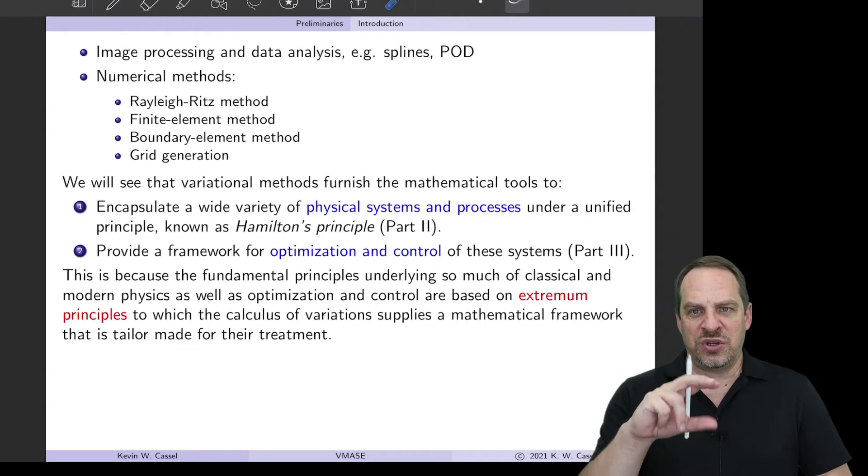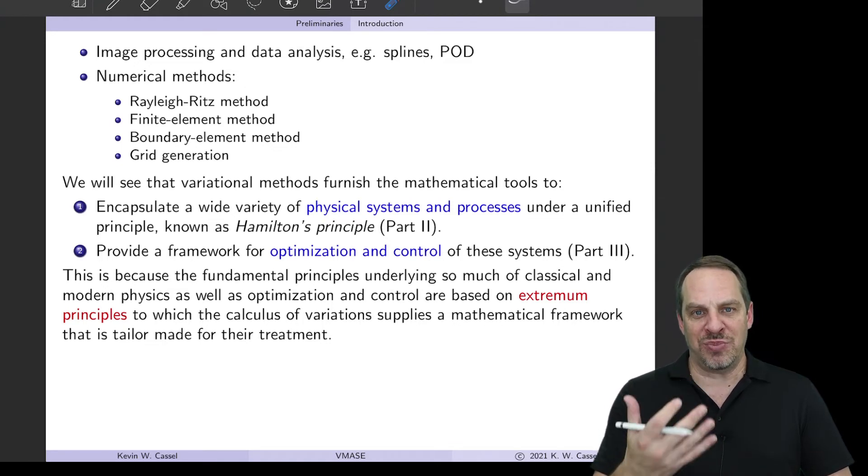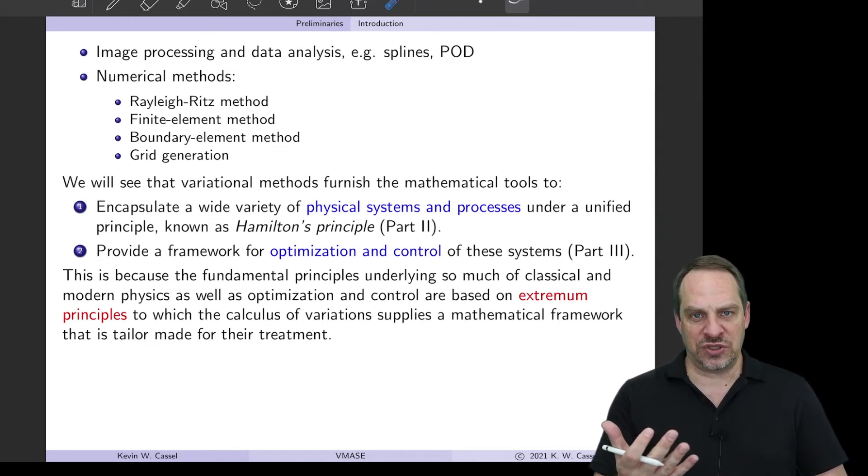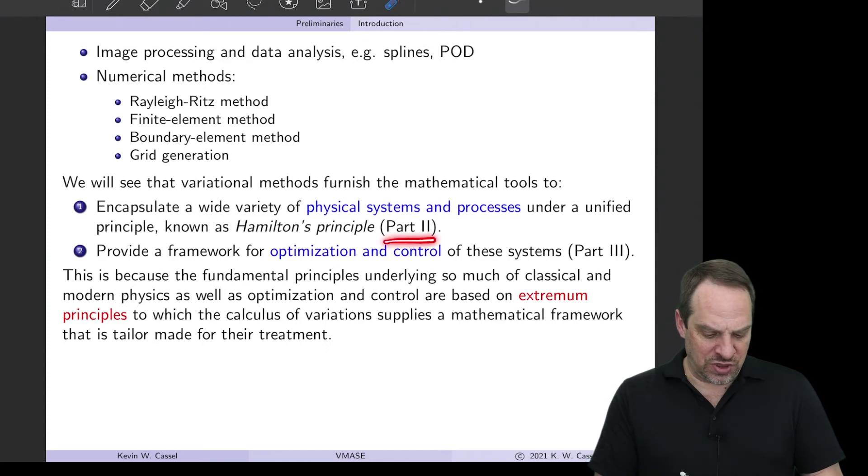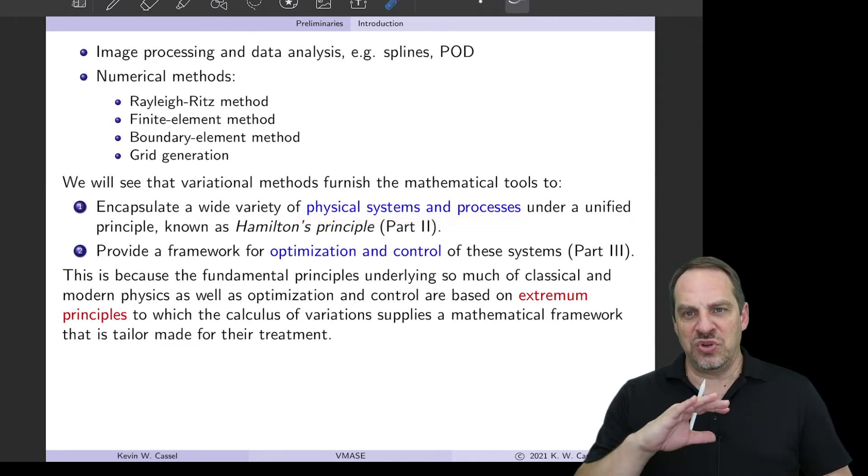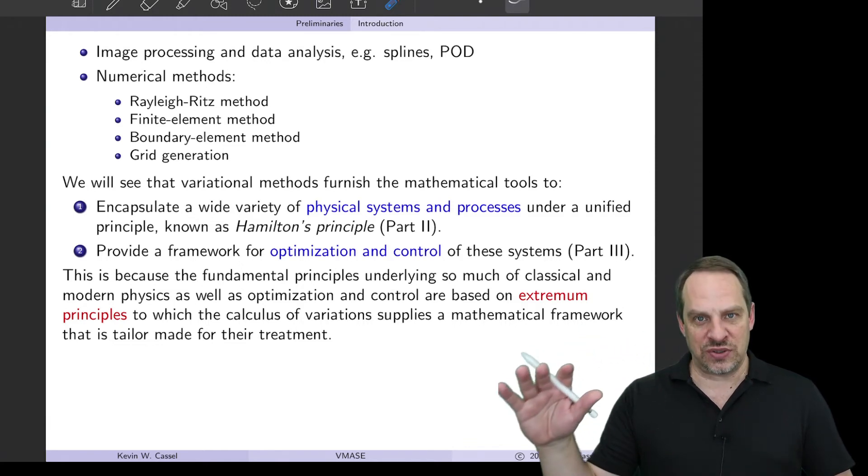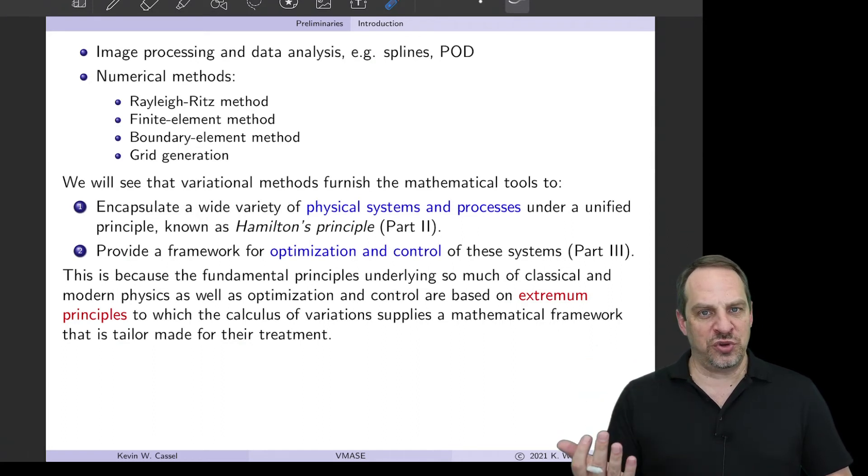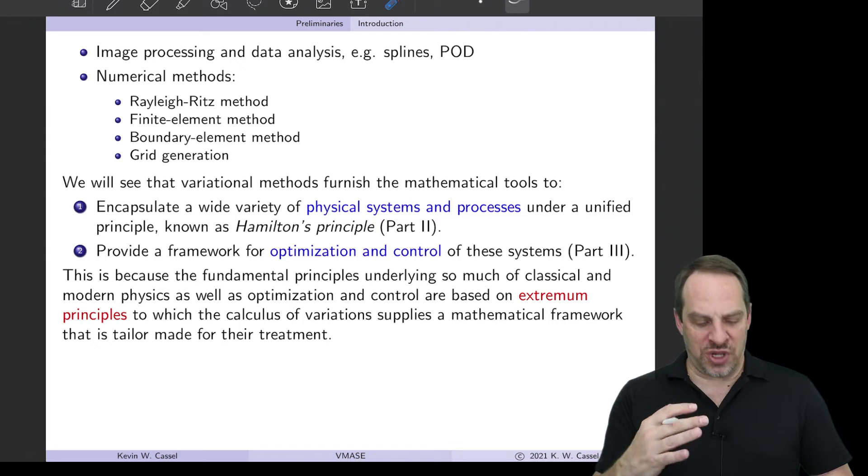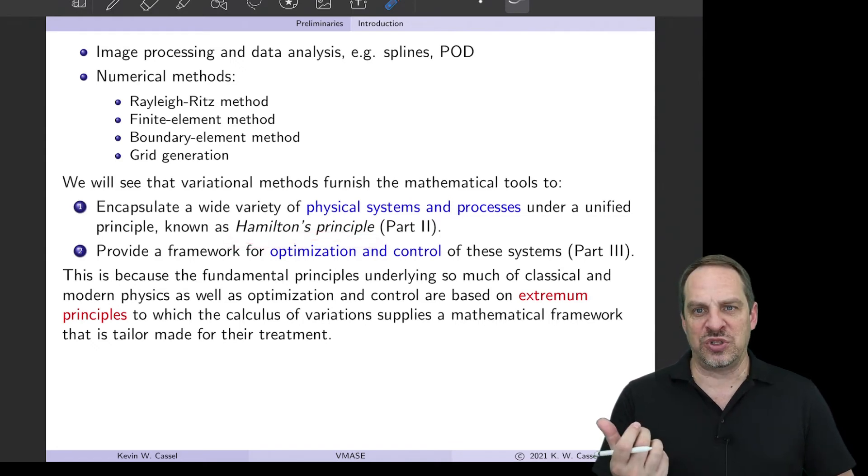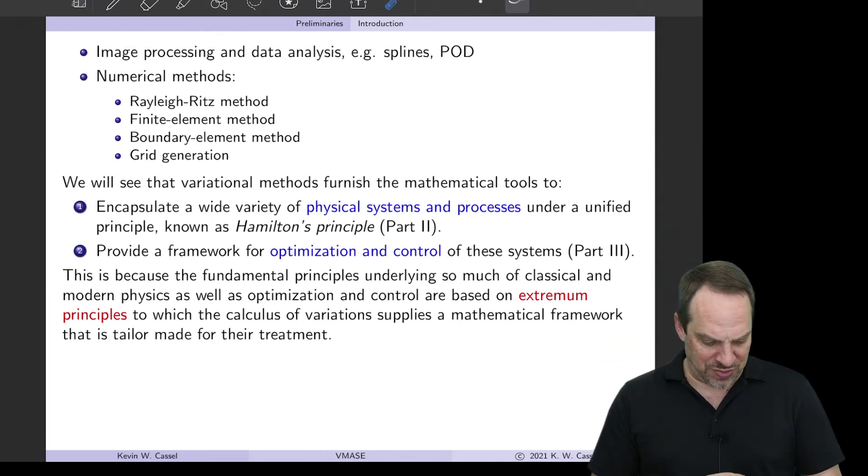So the first part of the book is going to focus on variational methods themselves. Chapter two really contains the mathematical background and methods for doing calculus of variations. And then all of part two is focused on applying variational methods to physical systems and processes. The beauty of part two is we're going to encapsulate a whole host and a wide range of different physical phenomenon, from engineering to science to classical mechanics to modern physics and a number of other areas, including fluid mechanics, my area, all within one umbrella. And that is the Hamilton's principle, which is a variational principle that unifies so many of the physical principles that we're familiar with, including Newton's second law, as well as many others.